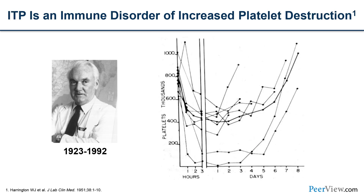Dr. Harrington proved that ITP is a disorder of platelet destruction by injecting plasma from ITP patients into himself. His platelet count dropped to life-threatening low levels and he almost died of a CNS hemorrhage. His platelet count recovered. We now know it was antibodies in the ITP plasma that caused this.